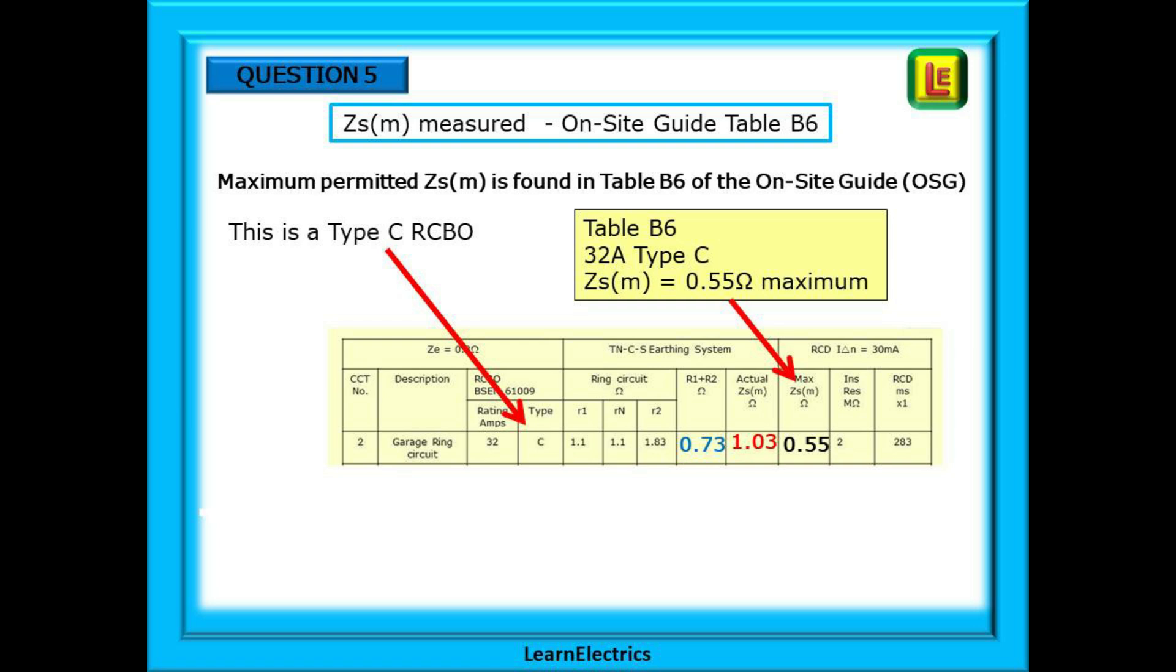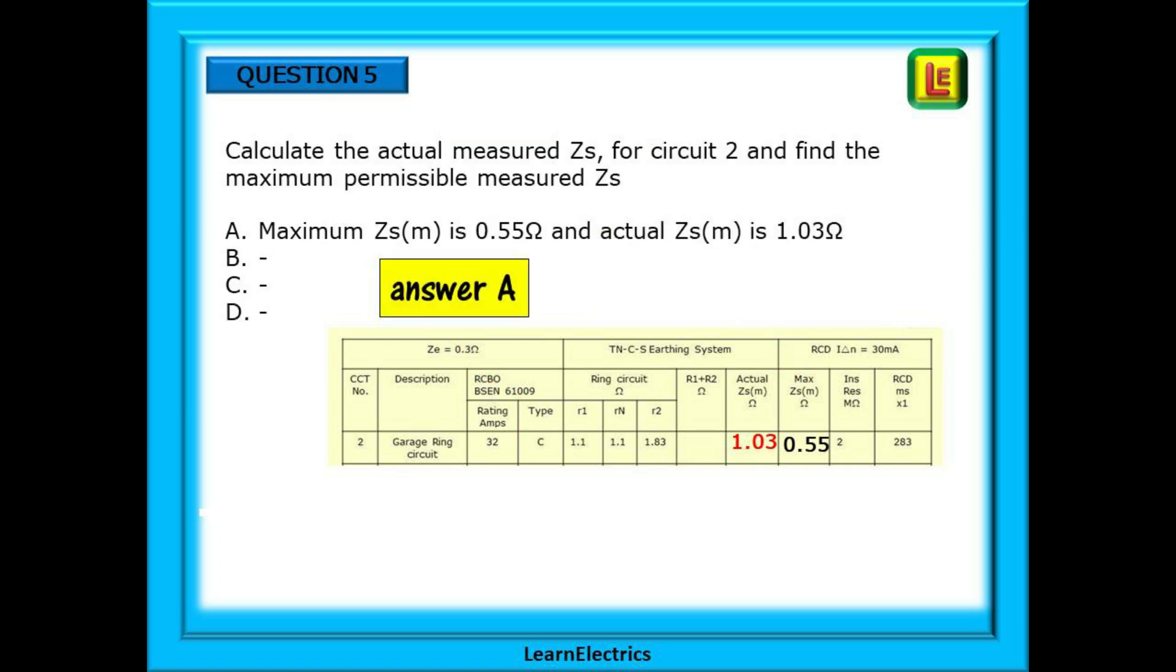Now find the maximum ZSM for a 32-amp Type-C breaker or RCBO. Pay attention to the type letter in the questions. There will not always be Type-B. They are testing your observational skills too. The maximum permitted ZSM is found in Table B6 of the On-Site Guide or OSG. This is shown as 0.55 ohms and in this case the actual exceeds the maximum. But we do have the information to answer the question and we should choose answer A.